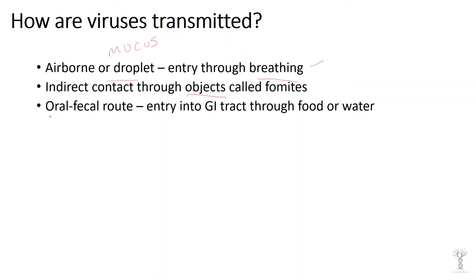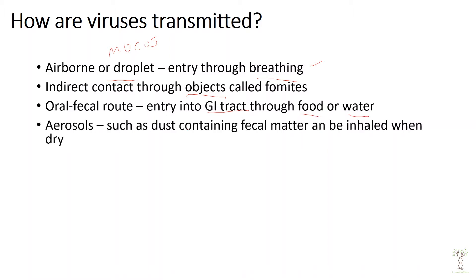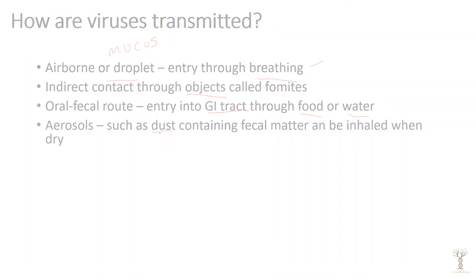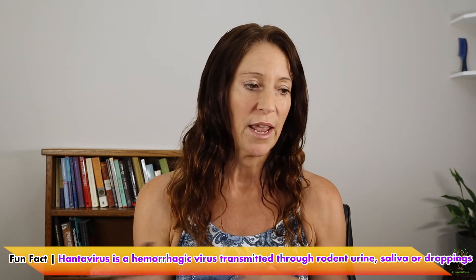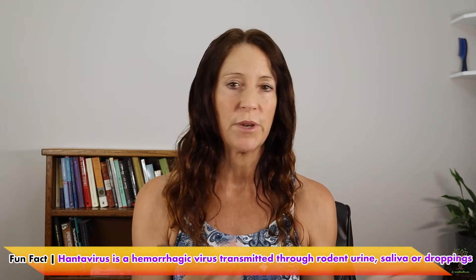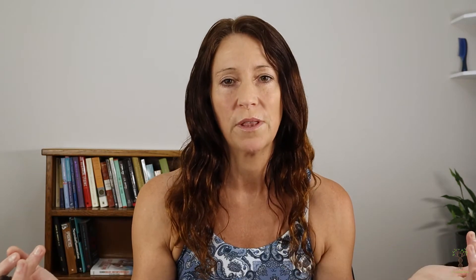Common colds and the flu are easily transmitted through objects. Sometimes things are transmitted through the oral-fecal route, infecting the GI tract through consuming contaminated food or water. Aerosols, like dust, can sometimes contain fecal matter that can be inhaled. A cool example is that viruses found in rodent droppings — if someone sweeps a barn floor, mouse droppings can go into the air and if you inhale that you can get sick.